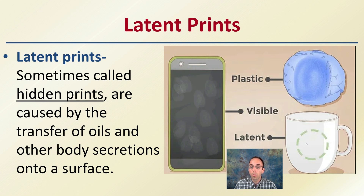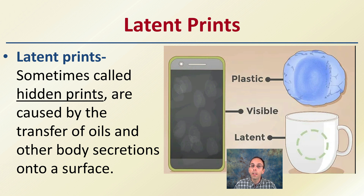Those latent prints are there, and when we add certain powders to them, they become visible — but initially, just on the surface, they're not visible. We call those latent prints, and that's what makes a good forensic scientist: who's able to identify and find those latent prints, make them visible, take pictures, and utilize them as evidence.